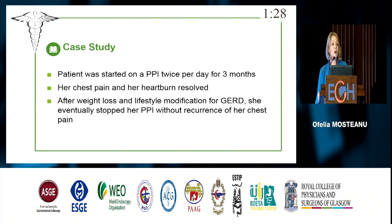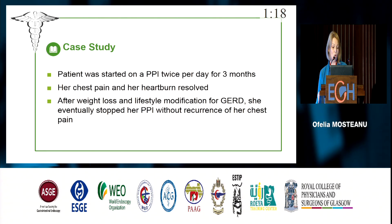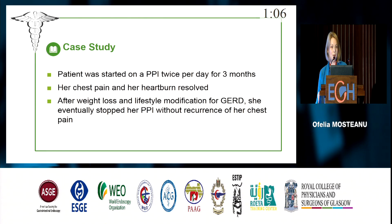As for our patient, she was started on PPI twice per day for three months, and her main symptoms — chest pain and heartburn — remitted completely. After a complete lifestyle modification and weight loss, she stopped the PPIs without recurrence of her chest pain again.